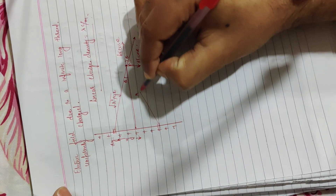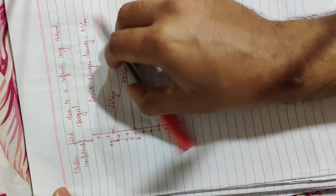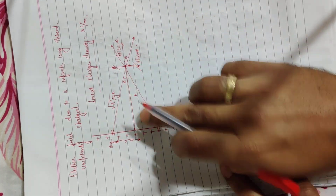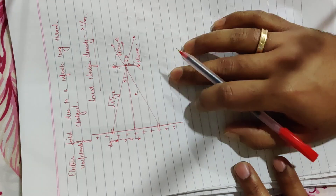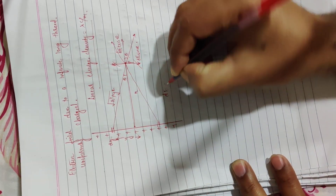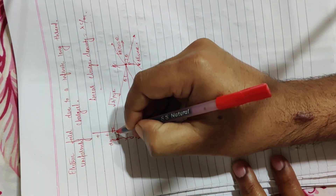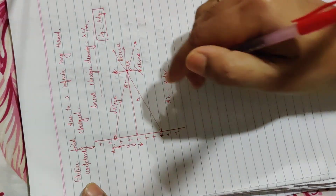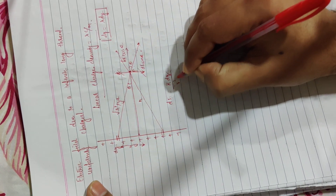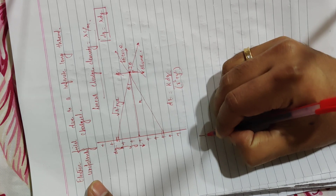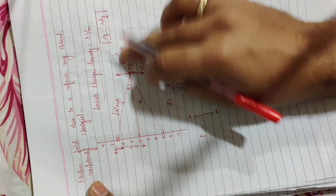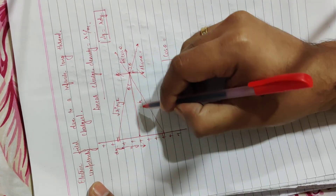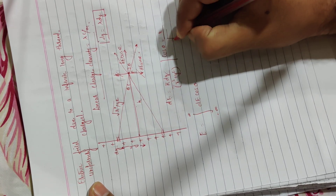If I take a dy length element here, then the electric field will be in this direction. If I resolve this, then dE cosθ and dE sinθ will be resolved. The dE sinθ components will cancel — the vertical component will cancel. So only the horizontal component will be connected. Cosθ equals base over hypotenuse, so cosθ = r / √(r² + y²).